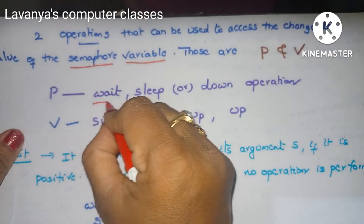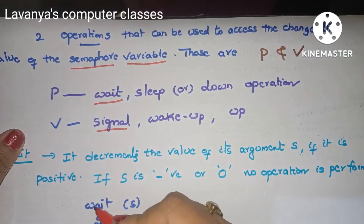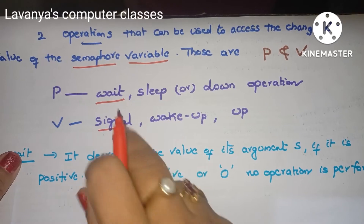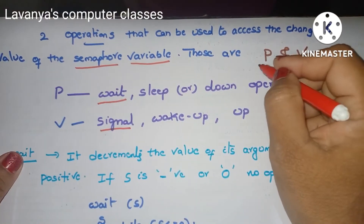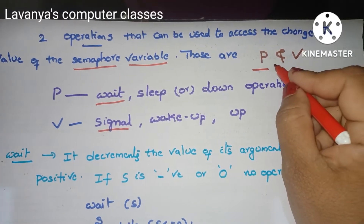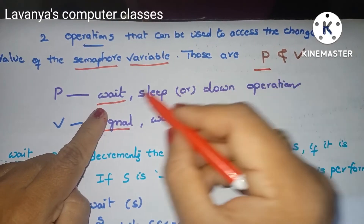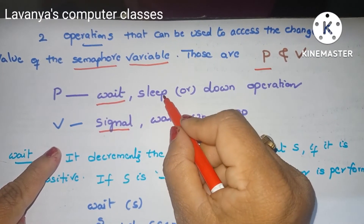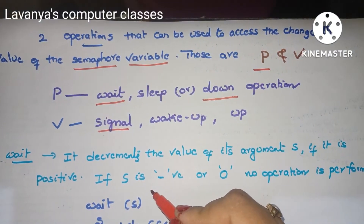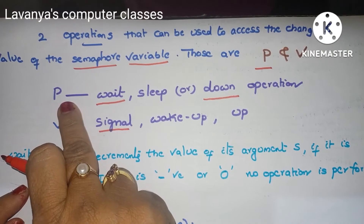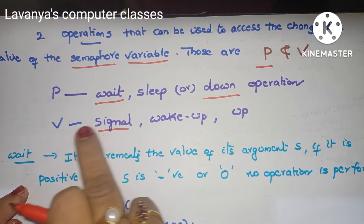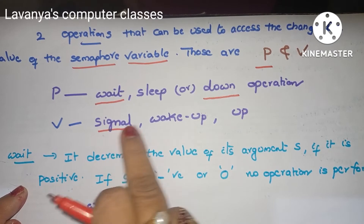The two operations are wait and signal. The wait operation is also called the P operation, and the signal operation is called the V operation. The P operation is also known as sleep or down operation — these are all synonyms.